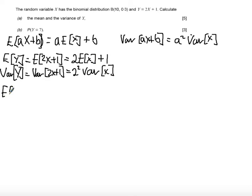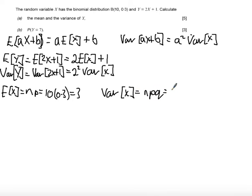Now, the expectation of a binomial distribution is given as np, so this is 10 times 0.3, which is 3. And the variance of X for a binomial distribution is given as npq, which is 10 times 0.3 times 0.7, which comes out as 2.1.